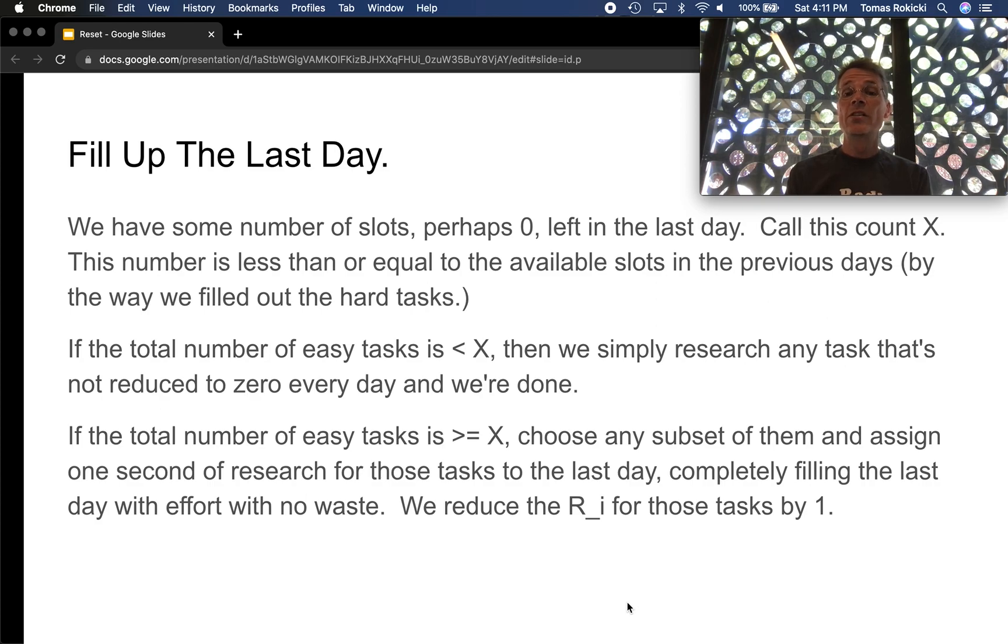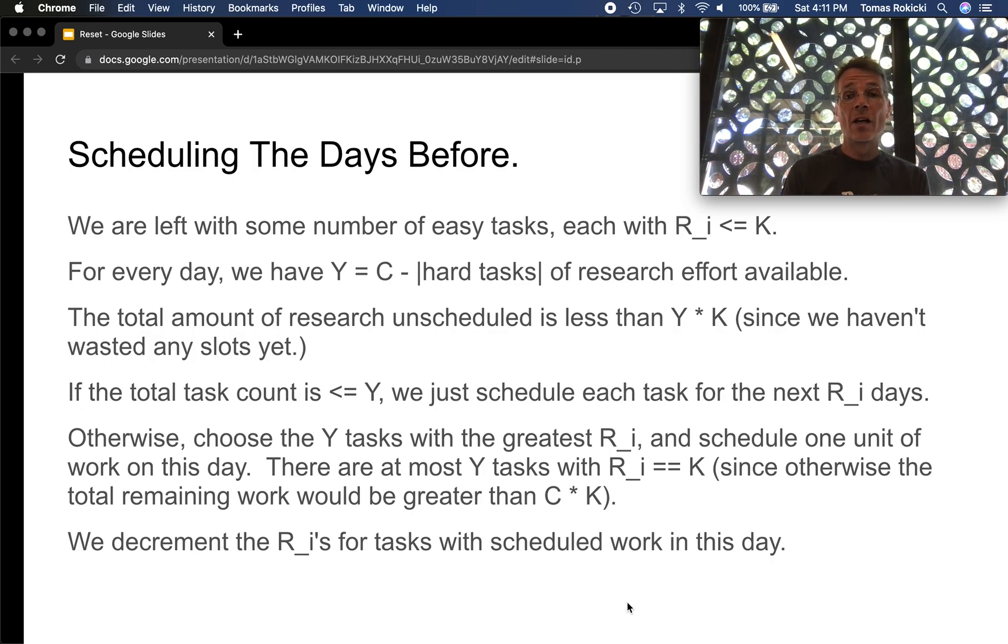Now if the total number of easy tasks is less than x we're basically done. We simply go ahead and schedule out each easy task fully starting on the first day and continuing on to the last till however many days it takes and that's guaranteed to fit in all the previous days. Otherwise we have a lot of easy tasks and we need to figure out how to squeeze them in that last day and the prior days. So we pick any subset of them, any subset of size x, and assign one second of research for those tasks to the last day, completely filling the last day with effort with no waste, and we reduce the R_i for those tasks by one.